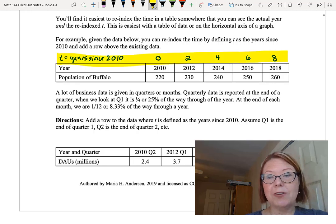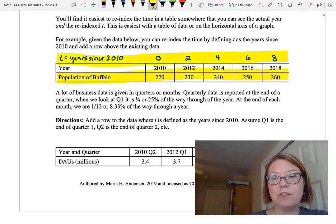Now, if I was to graph the data or work with the data in an equation, I would use our new time row, 0, 2, 4, 6, 8, and the population of Buffalo row, the 220, 230, etc. row.